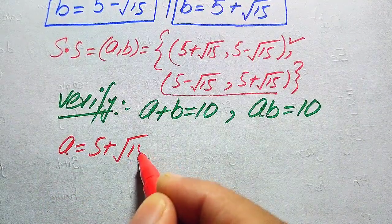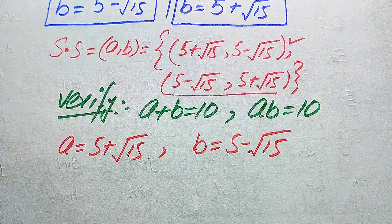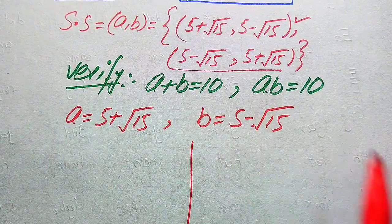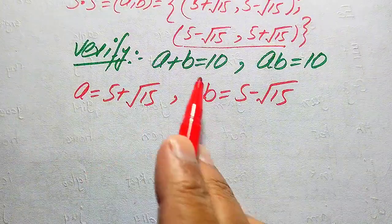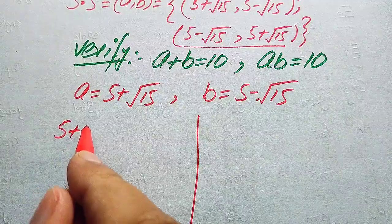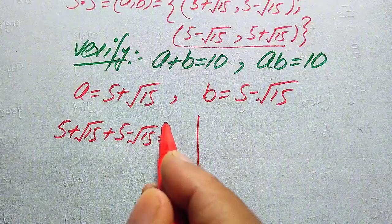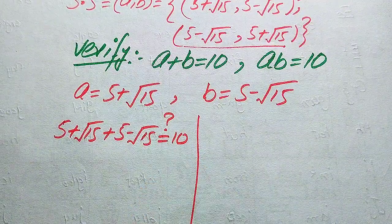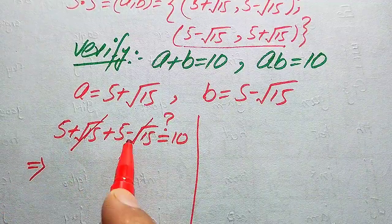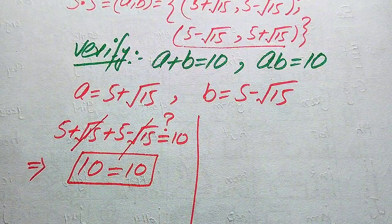We substitute both values into the first equation: a plus b equals (5 plus square root of 15) plus (5 minus square root of 15). The positive and negative square root of 15 terms cancel each other out, and 5 plus 5 equals 10. So a plus b equals 10, confirming both sides are equal.